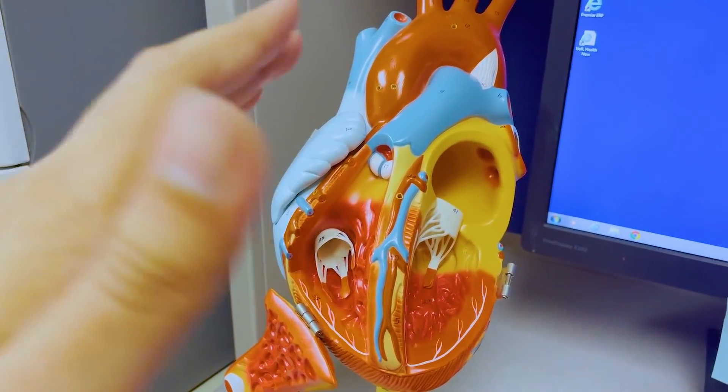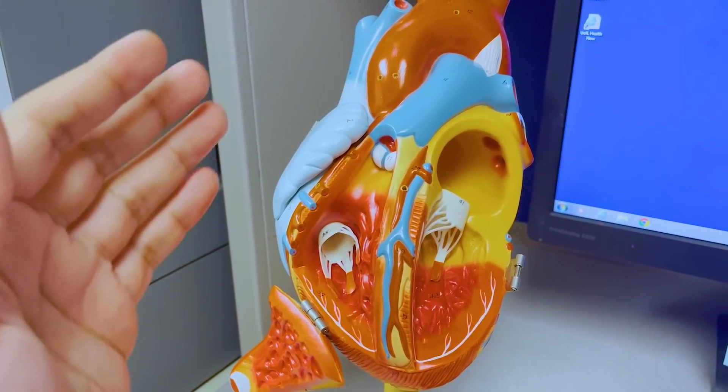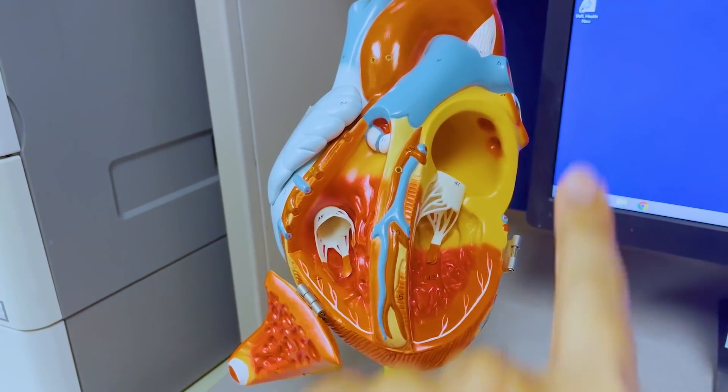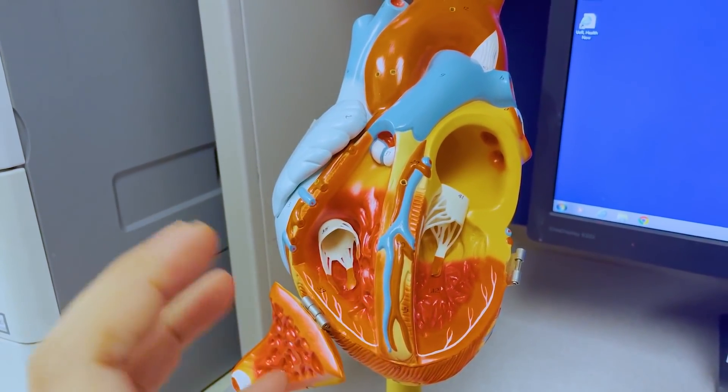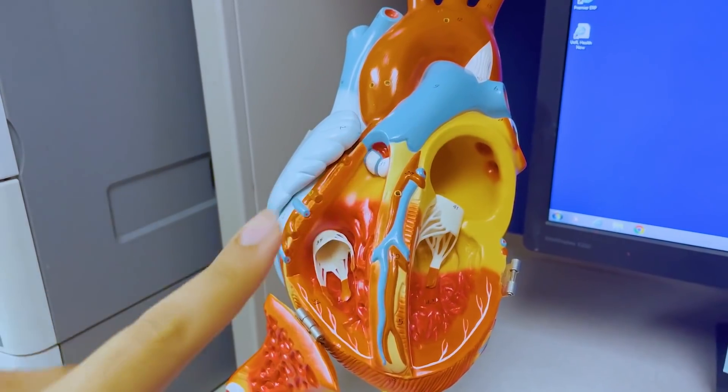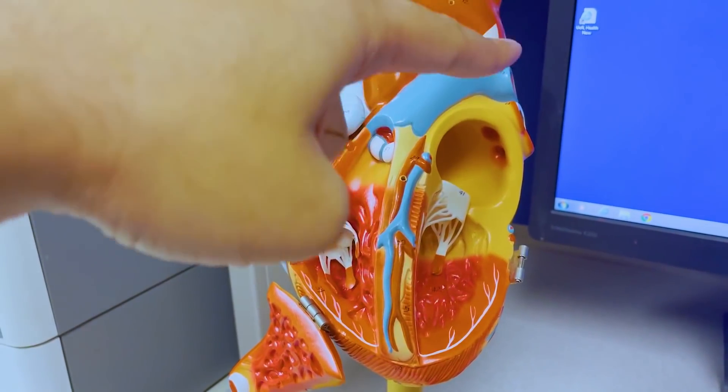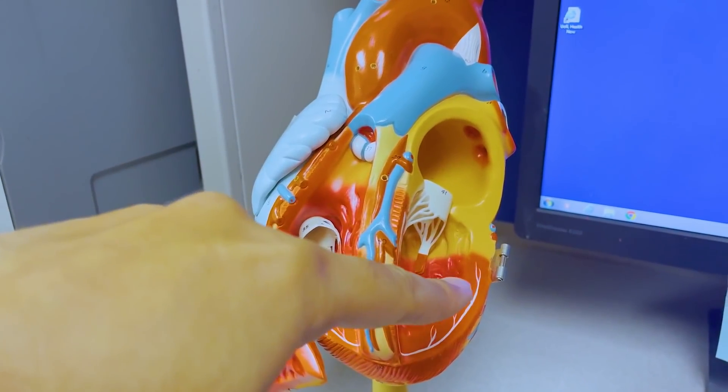Before we go over the real machine, let's go over a few basic things. All the deoxygenated blood is coming to the right side of the heart. This is the right side, this is the left side of the heart. All the deoxygenated blood comes to the right side where the right ventricle is squeezing all that blue blood, the deoxygenated blood, to the lungs to get oxygenated. And the oxygenated blood is coming from the left atrium to the left ventricle.